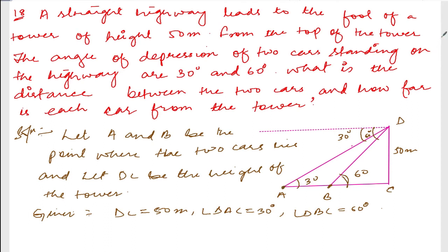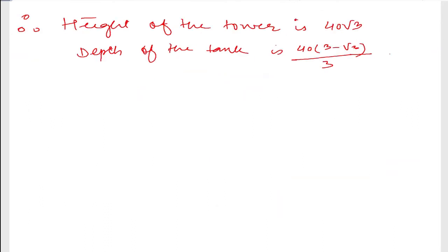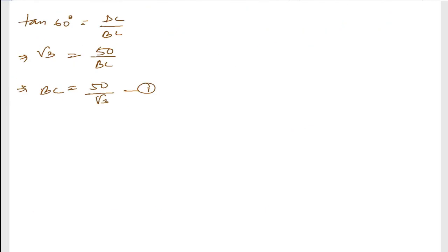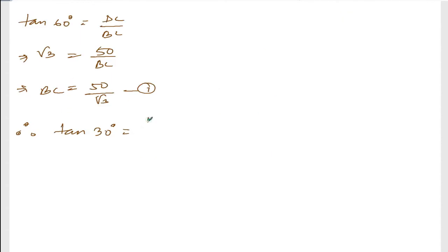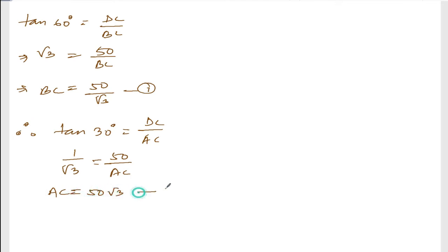Now let us find tan of 30 degrees. Tan of 30 degrees equals DC divided by AC. Tan 30 is 1 by root 3, and DC is 50, so 1 by root 3 equals 50 divided by AC. Transferring AC to this side: AC is equal to 50 root 3. This is equation number two.